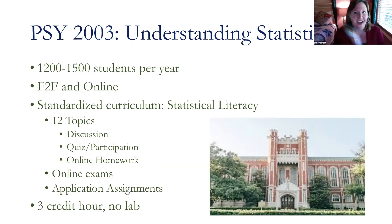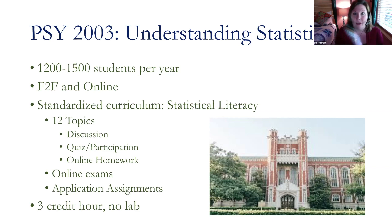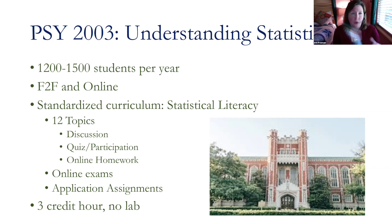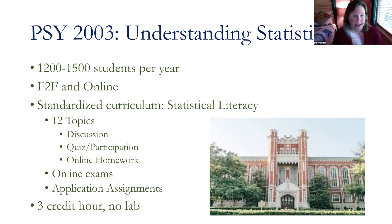I am the undergraduate statistics coordinator at the University of Oklahoma, in the psychology department, but we serve all of the pre-health majors, as well as psychology, and a handful of other majors. Generally, we have about 1,200 to 1,500 students take our introductory stats class a semester, and we offer it both face-to-face and online. Our focus is really on statistical literacy because we don't have a lab component. Students emphasize conceptual understanding of statistics and how they're relevant, and they will practice that in a secondary course in research methods. It is a three-hour course with no lab.